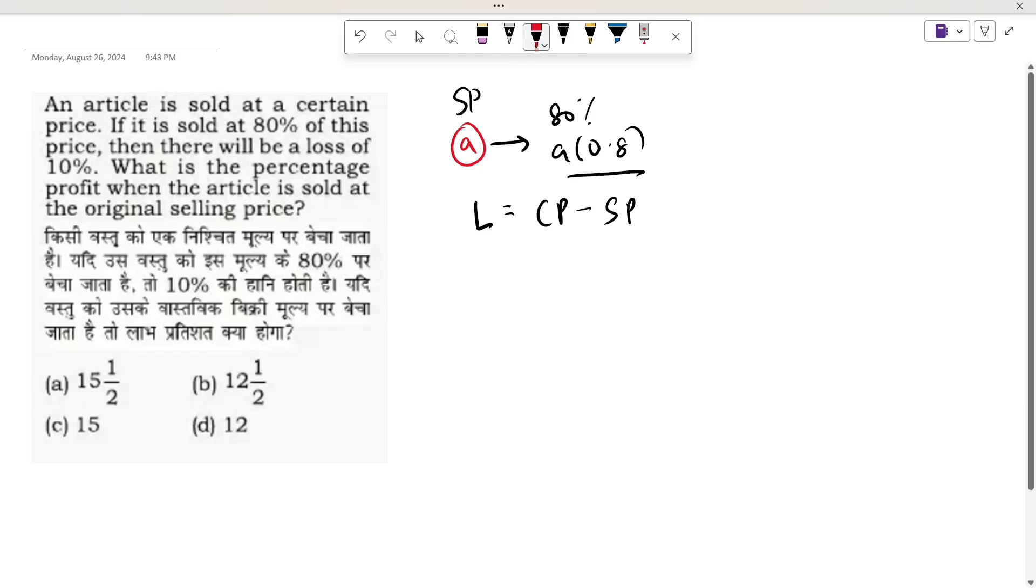Selling price here is A into 0.8. Cost price I don't know. Loss is 10%, so I can write this as 10%.